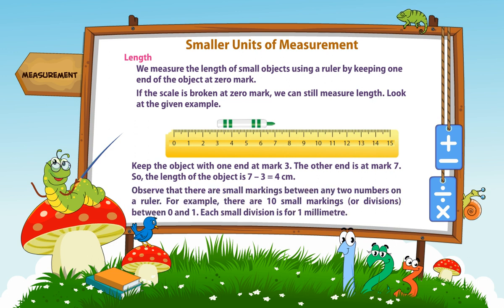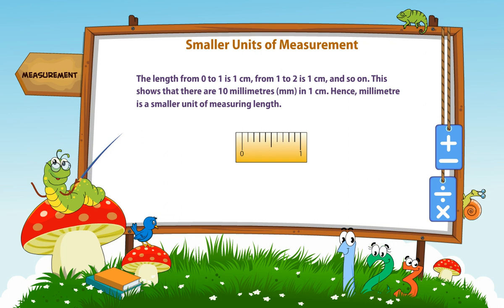Observe that there are small markings between any two numbers on a ruler. For example, there are 10 small markings or divisions between 0 and 1. Each small division is for 1 mm. The length from 0 to 1 is 1 cm, and from 1 to 2 is 1 cm. This shows that there are 10 mm in 1 cm.